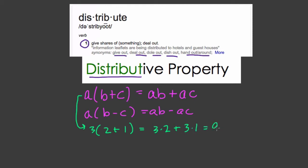6 plus 3 is 9. With subtraction, same idea. If we have 3 times 2 minus 1, this is really 3 times 1, or 3. But we can also distribute and say it's 3 times 2 minus 3 times 1, which is really 6, minus 3, which is 3.